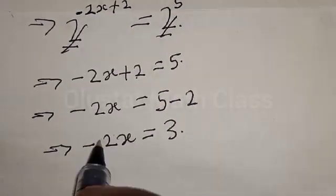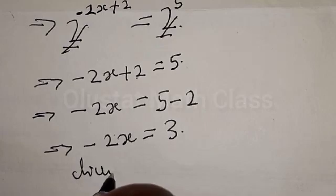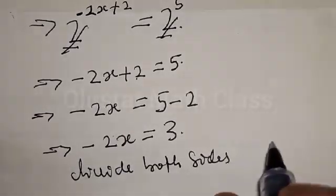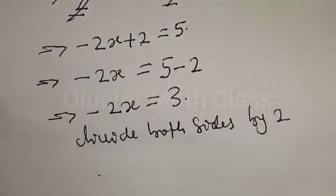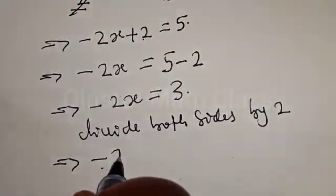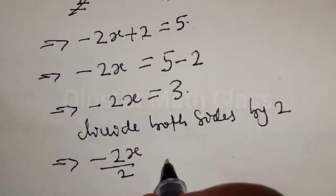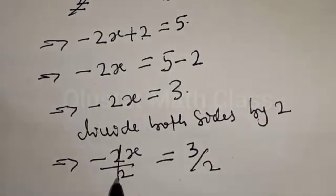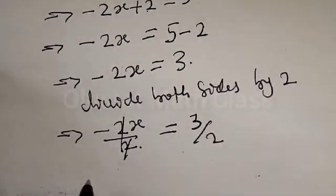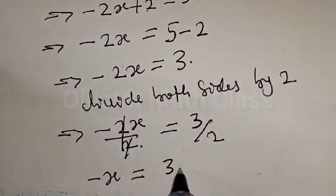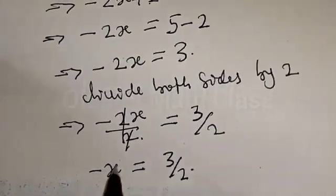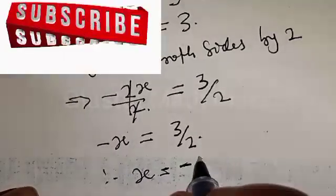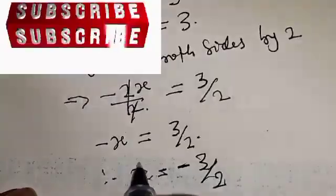Let's divide both sides by 2. This implies that minus 2s over 2 equals 3 over 2. The 2s cancel, leaving minus s equal to 3 over 2. Therefore, our final answer is s equals minus 3 over 2.